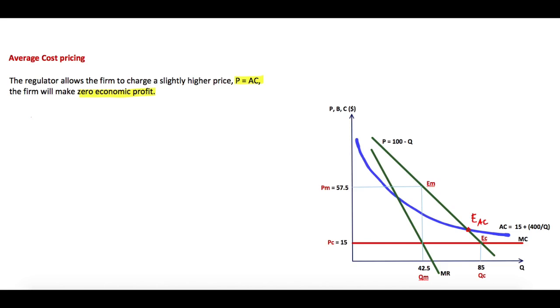So when the price equals average cost, or 100 minus Q equals 15 plus 400 over Q, then you get Q² minus 85Q plus 400 equals zero. And you can use the calculator to get